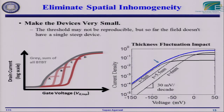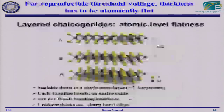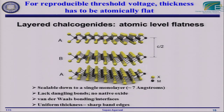Since doping is causing so much of the problem, we need to eliminate it. Instead of using doping, we need to induce carriers electrostatically using gate work functions to bring in electrons and holes. One proposed structure uses an N gate and a P gate: the N gate induces electrons below it and the P gate induces holes below it, so tunneling occurs vertically between the gates with no actual doping in the channel. Another perhaps more futuristic alternative is using atomically perfect materials — layered chalcogenides — which have atomic-level flatness that could eliminate variation.